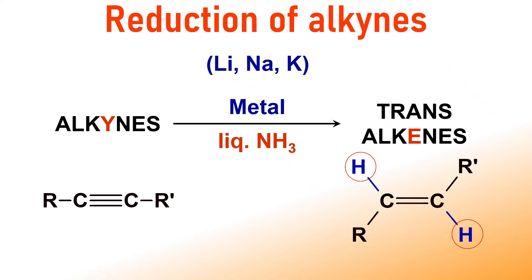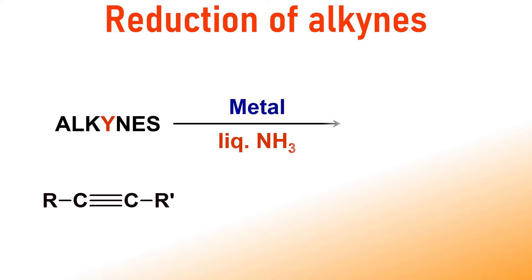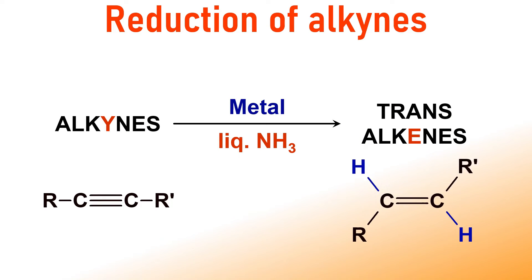Let us begin our journey. This is the general representation of reduction of alkynes using metals in liquid ammonia. The alkynes can be reduced to trans-alkenes by alkali metals dissolved in liquid ammonia. The reaction is carried out at around minus 33 degrees Celsius.